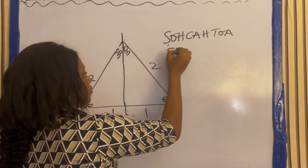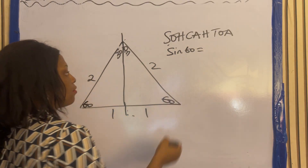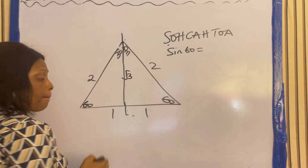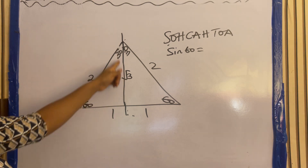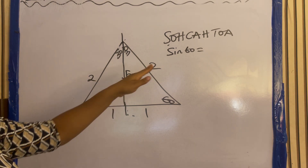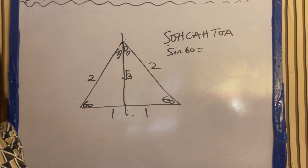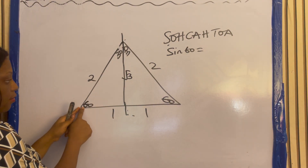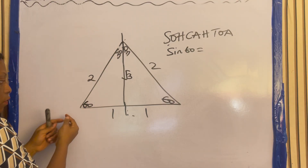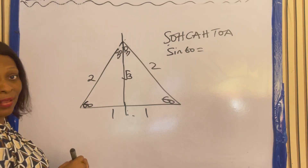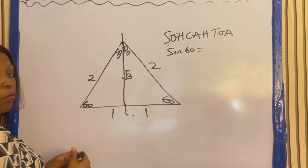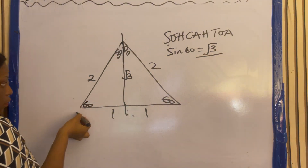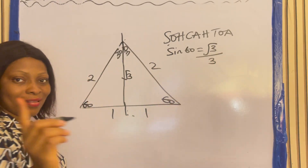Let's look at sin 60. Before that, note that this side here is root 3. So sin 60 — sine is opposite over hypotenuse. Looking at sin 60, the hypotenuse is the longest side, and where the angle is lying is the adjacent, so here is the opposite. Opposite over hypotenuse: root 3 over 2. So sin 60 is root 3 over 2.